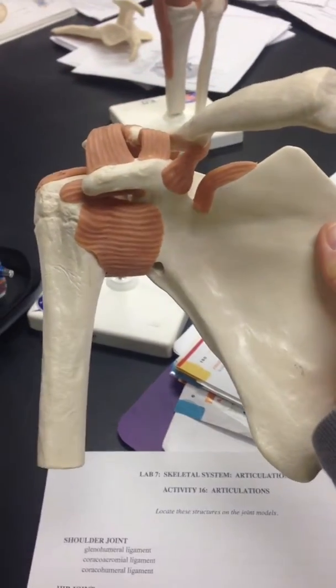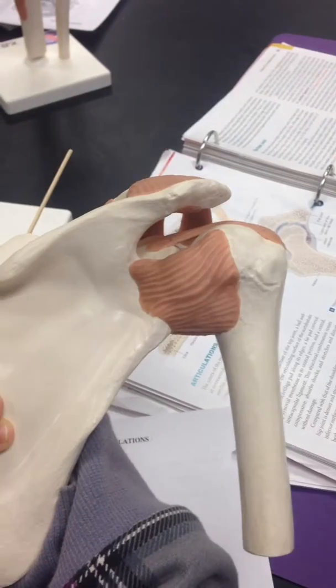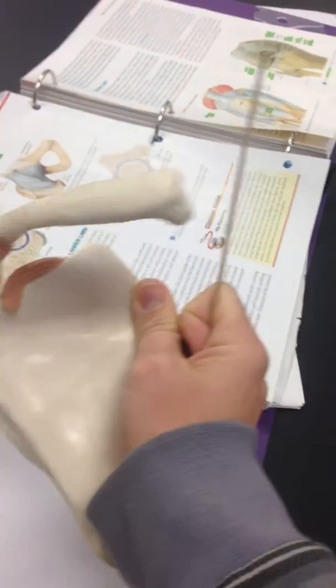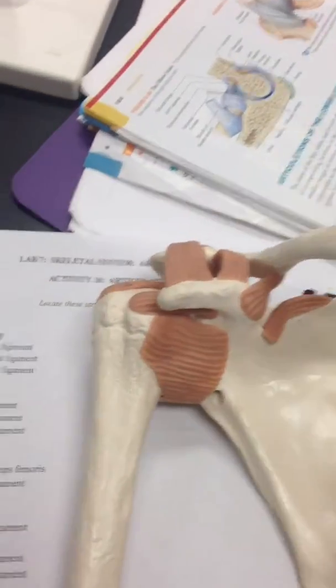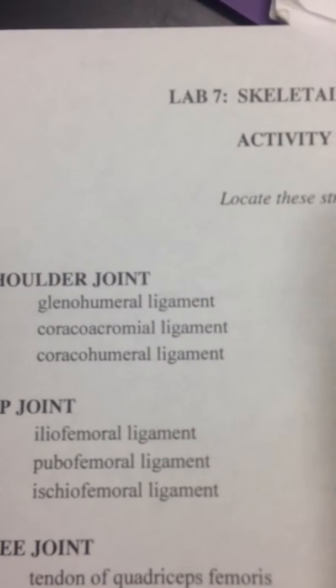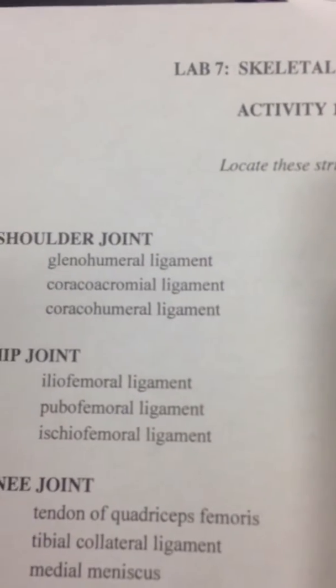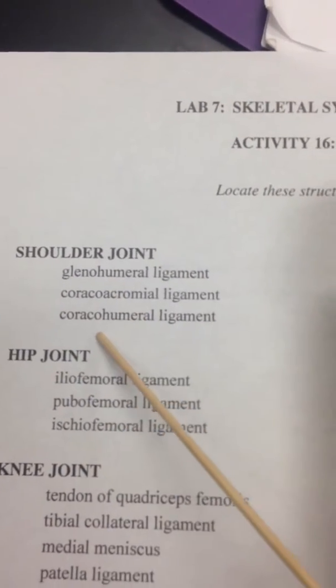This is the shoulder joint. We're gonna discover what is what. These are the words: the glenohumeral, the coracromial, the corahumeral.